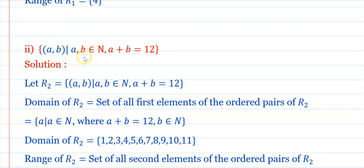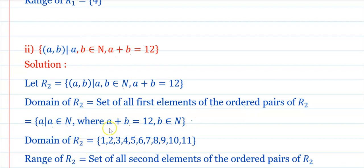R₂ = {(a,b) : a, b ∈ N, a+b = 12}. Domain of R₂: values of a from 1 to 11 (since b must also be a natural number), so domain = {1,2,3,4,5,6,7,8,9,10,11}. Range of R₂: corresponding b values = {11,10,9,8,7,6,5,4,3,2,1}.